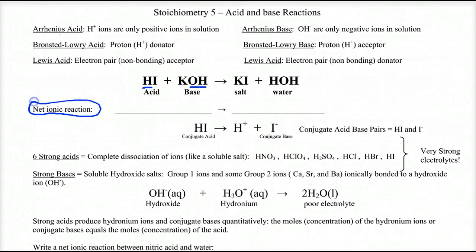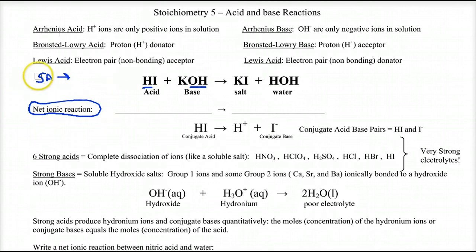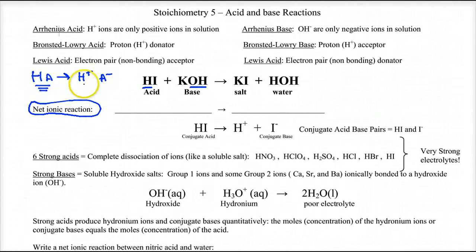We started this with an earlier lecture on solubility, and it's the same idea. So we're going to write a net ionic reaction. The first thing to understand is that strong acids completely dissociate. So if you have HA and it becomes H+ and A-, you have to know that a strong acid means every single HA molecule becomes dissociated into protons and the conjugate base.